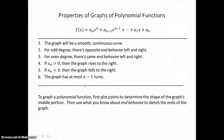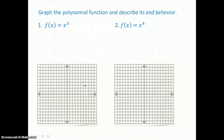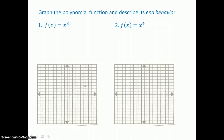To graph a polynomial function, first plot points to determine the shape of the graph's middle portion, then use what you know about end behavior to sketch the ends of the graph. In our first example, we're going to graph a basic cubic function. Because it's an odd degree, we know that this graph is going to have opposite end behavior. And because the leading coefficient is positive, I also know it's going to rise to the right.